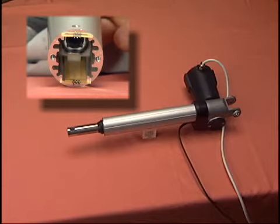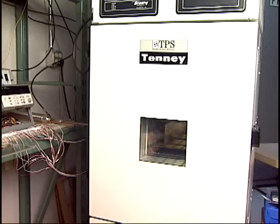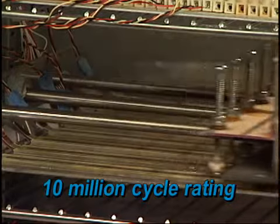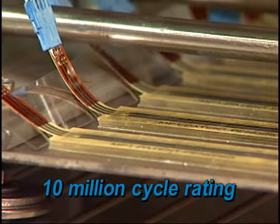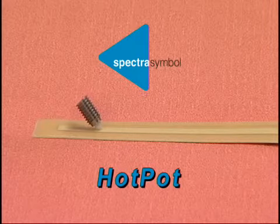The Hot Pot is aggressively tested in humidity up to 95% and in temperatures from minus 40°C to 85°C. When high life cycle output or robust design is needed, engineers choose the Hot Pot potentiometer.